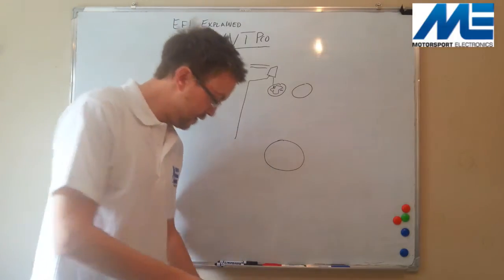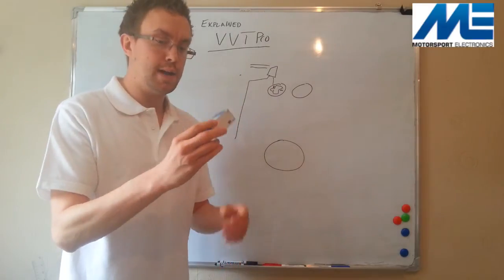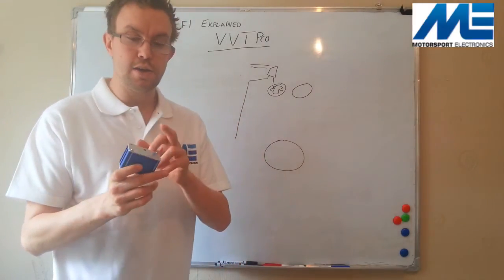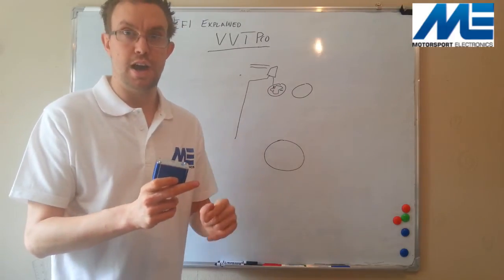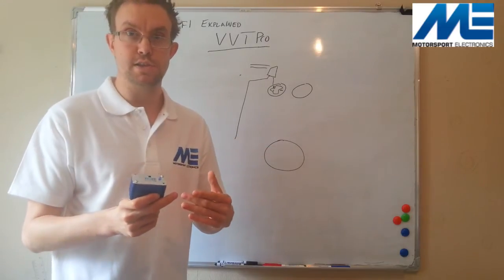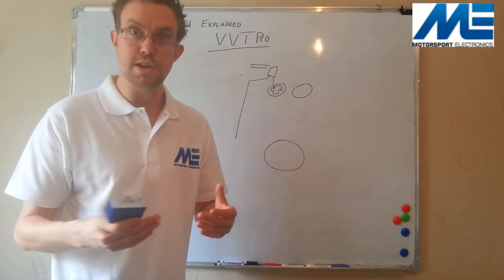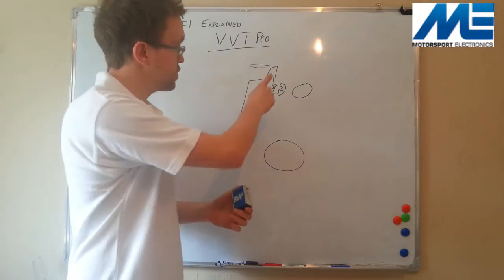So, what we've done at ME is we've designed this new system called the VVT Pro, and it takes in the camshaft sensor input, and it has a Y-splitter cable which takes in the crankshaft signal, because obviously that might be used by another aftermarket management system, or a MegaJolt, or a Nodiz, or something that's just doing ignition only, and then it has an output to drive the solenoid.